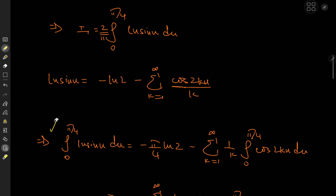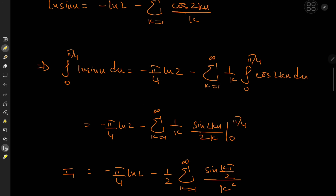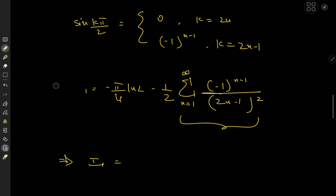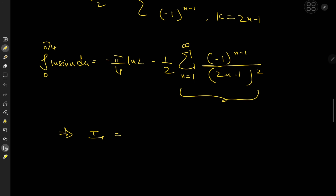Now I₁ is this integral times the prefactor 2/π. So multiplying through: the π's and 2's cancel, and we get I₁ = −(log 2)/2 − G/π.